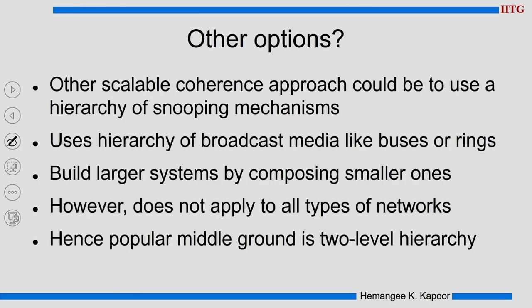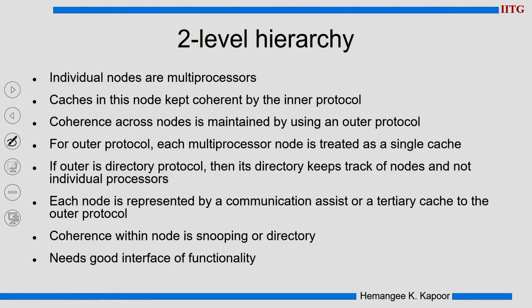Are there other options — should we do away with snooping altogether? We can have a hierarchy of snooping, but having larger depths of the tree means traveling from leaf nodes through several intermediate nodes before reaching the root, which becomes very difficult to scale. However, if I limit it to a two-level hierarchy, it becomes manageable and I can still use the snooping idea for a bigger network. A two-level hierarchy does work very well.